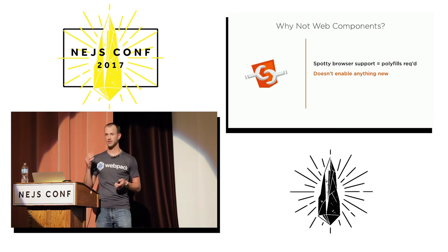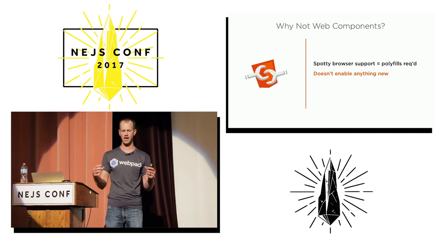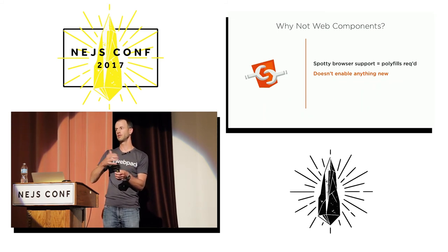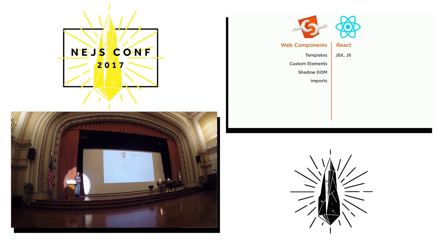There are two other issues. The Shadow DOM was novel at the time — simple CSS selectors without worrying about leaking. But today JavaScript libraries keep on innovating. Compared to React, for instance, React has answers to all of these things: JSX for templates, React components as your custom element, CSS modules or CSS-in-JS to keep styles tied to one component, and we're all using bundlers and NPM anyway so we don't need the HTML import specification.